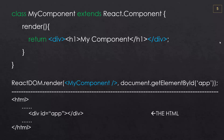So render is required, and this is where we're going to return the actual content. Here we just have a div and inside that div we have an h1 with the text 'My Component'.